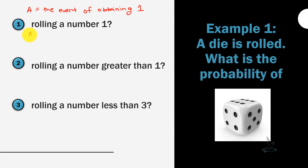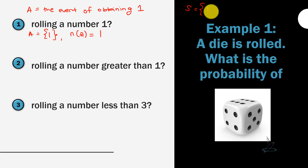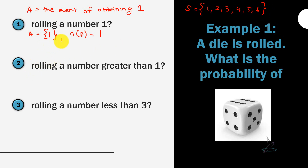Event A contains only {1}, so n(A) = 1. The sample space when rolling a die is {1, 2, 3, 4, 5, 6}, so n(S) = 6. Therefore, P(A) = n(A) / n(S) = 1/6.